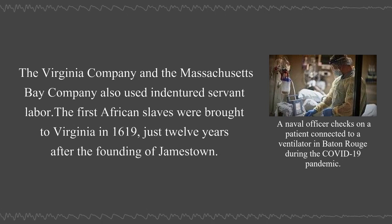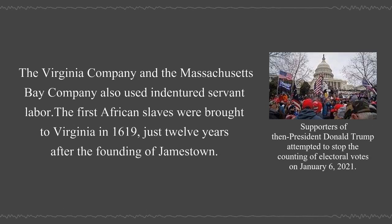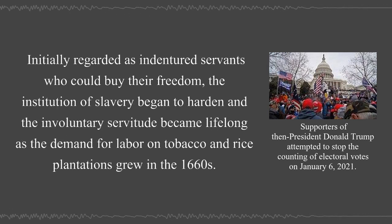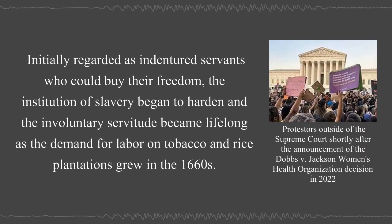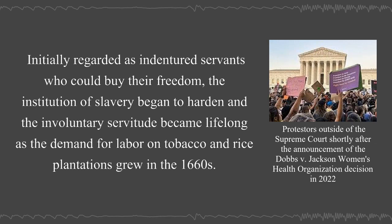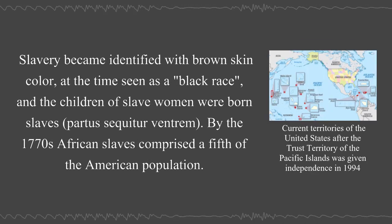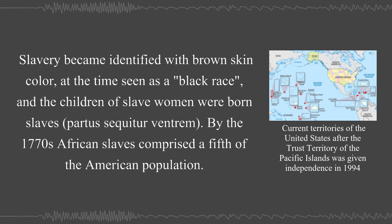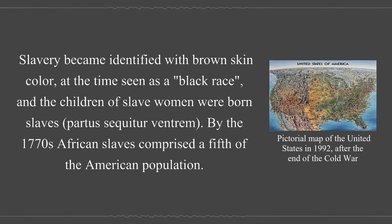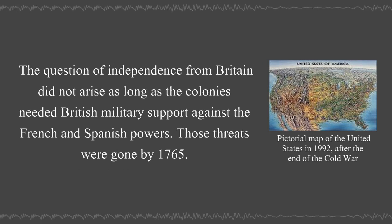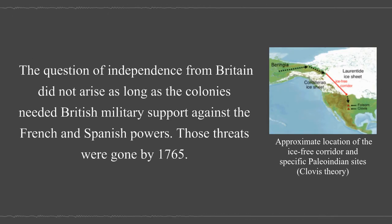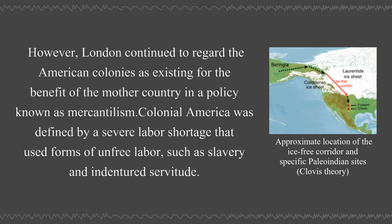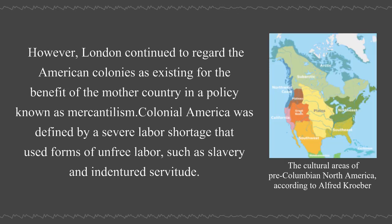The first African slaves were brought to Virginia in 1619, just 12 years after the founding of Jamestown. Initially regarded as indentured servants who could buy their freedom, the institution of slavery began to harden and the involuntary servitude became lifelong as the demand for labor on tobacco and rice plantations grew in the 1660s. Slavery became identified with brown skin color, at the time seen as a black race, and the children of slave women were born slaves (partus sequitur ventrum). By the 1770s, African slaves comprised a fifth of the American population. The question of independence from Britain did not arise as long as the colonies needed British military support against the French and Spanish powers. Those threats were gone by 1765. However, London continued to regard the American colonies as existing for the benefit of the mother country in a policy known as mercantilism.